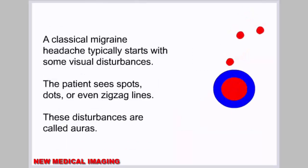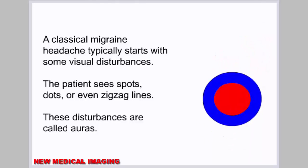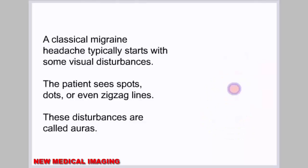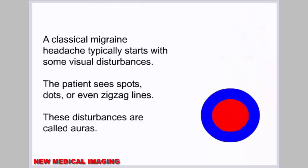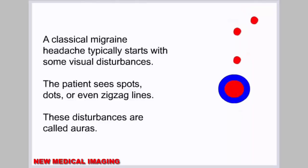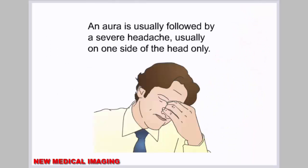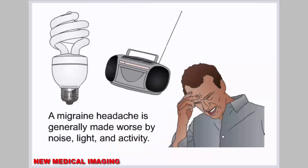A classical migraine headache typically starts with some visual disturbances. The patient sees spots, dots, or even zigzag lines. These disturbances are called auras. An aura is usually followed by a severe headache, usually on one side of the head only. A migraine headache is generally made worse by noise, light, and activity.